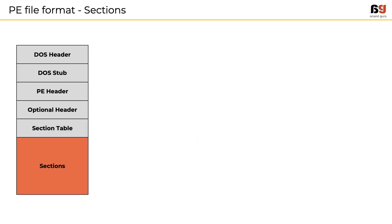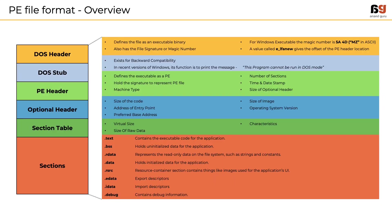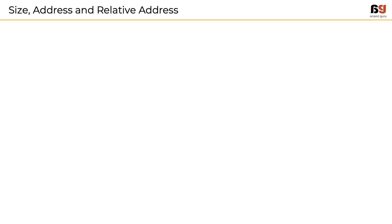Finally, we have the sections part of the PE file format. This part contains multiple sections depending on what the application is trying to achieve. For example, the .text section contains the executable code, and .bss holds uninitialized data for the application, and so on. Here is a snapshot of all the parts of the PE header and their brief descriptions. We've noticed that a couple of terminologies appear repeatedly, like size of a specific section, address, relative address, etc. What do they mean and how do we understand them?